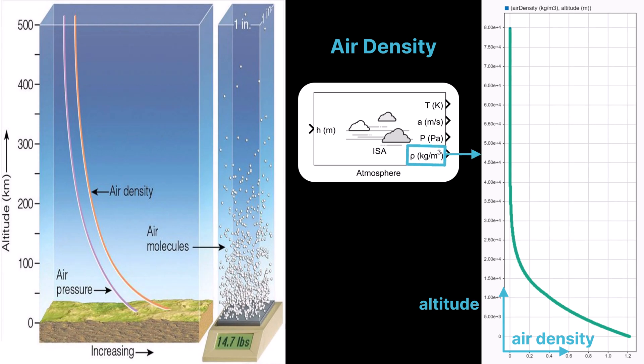Air density decreases with altitude because both air pressure and temperature decrease as you go higher in the atmosphere. Since density depends on both, the reduction is quite significant with altitude. You can use the ISA atmosphere block in Simulink to get air density as a function of altitude, based on the international standard atmosphere model. This is particularly useful for modeling aerodynamic forces or simulating high-altitude flight.